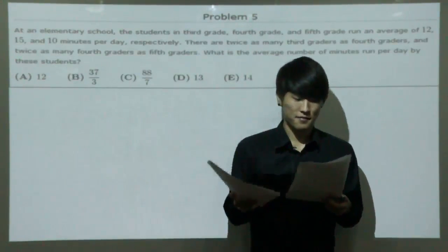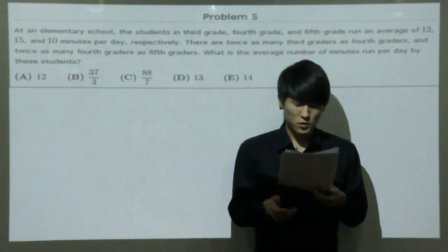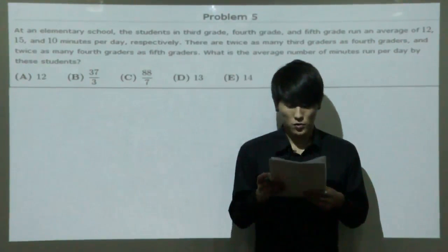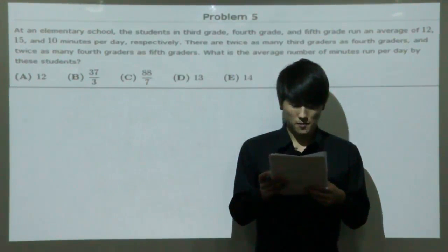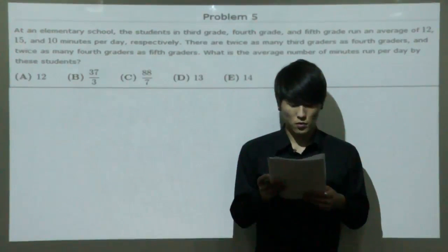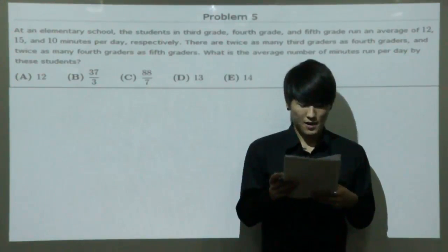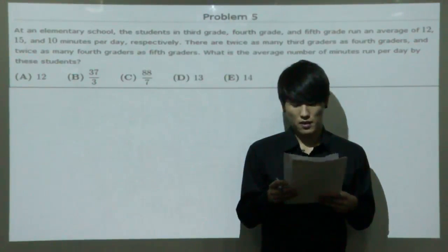Question number 5. At an elementary school, the students in 3rd grade, 4th grade, and 5th grade run an average of 12, 15, and 10 minutes per day, respectively. There are twice as many 3rd graders as 4th graders, and twice as many 4th graders as 5th graders. What is the average number of minutes run per day by these students?